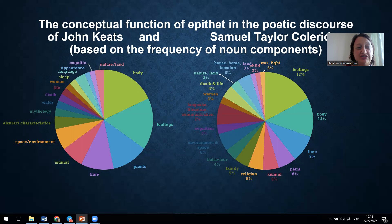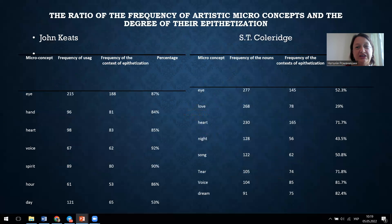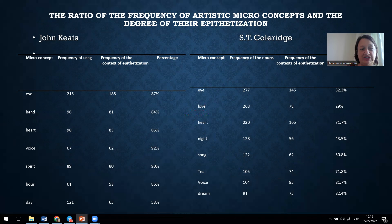The conceptual space of Coleridge's Poetics has 21 most frequently integrated conceptual fields, presented in diagram number 2. With the help of the above-mentioned program, we establish the specifics of the lexical content of each of the selected conceptual fields and their variability.